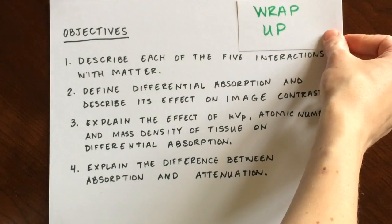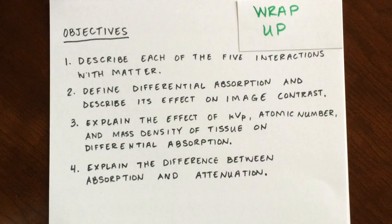Let's wrap up by reviewing your objectives. Specifically, you should know the name of the interaction, the energy range at which it occurs, the specifics of the process, and whether or not it has an effect on diagnostic x-ray images. You should be able to define differential absorption, describe how it affects image contrast, and explain how kVp, atomic number, and mass density affect differential absorption. Lastly, you should be able to explain the difference between absorption and attenuation.